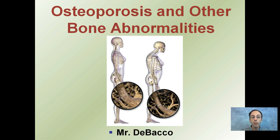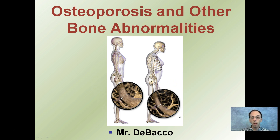Here we're going to look at osteoporosis and some other bone abnormalities. Looking at some of these abnormalities, we're looking at weakening of bone structure. Here we have a normal individual — we see the width of the trabeculae here, that would be considered normal. Sadly, in this individual we have much thinner trabeculae, indicating these bones are more likely to be fractured or broken than the individual with a normal amount of bone density and structure.